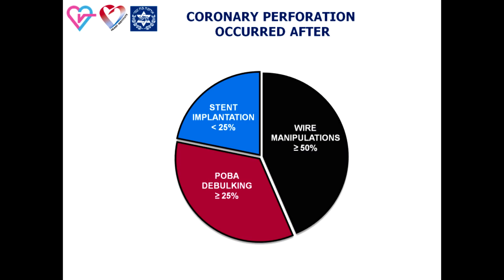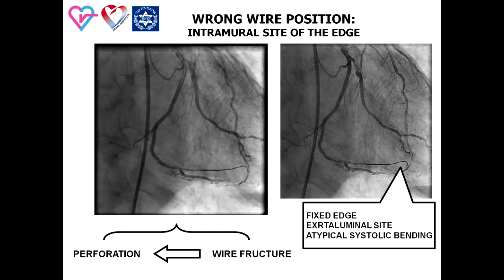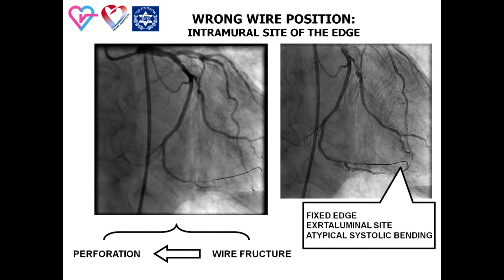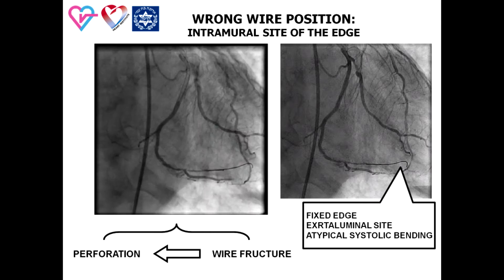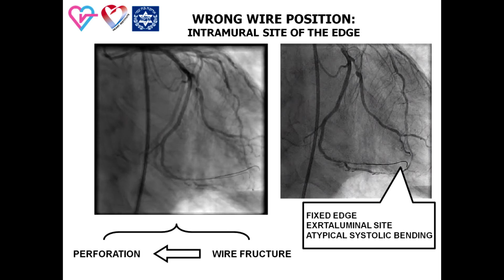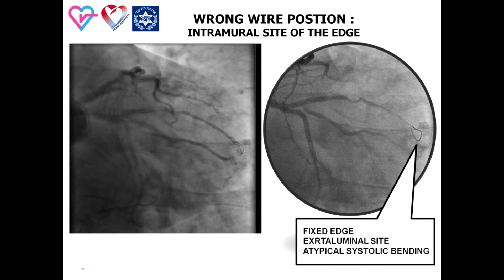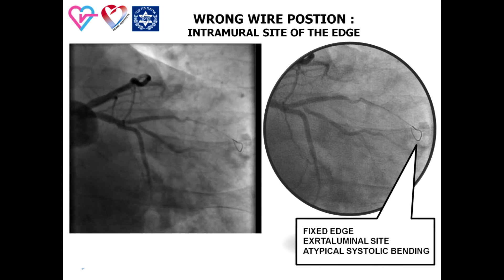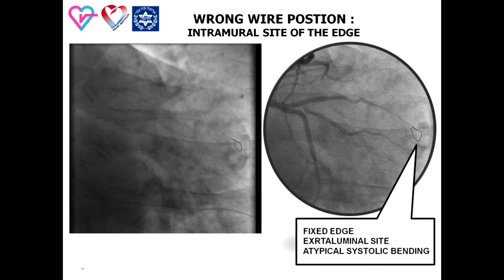The majority of coronary perforations are related to incorrect wire advancement and manipulations. Intramural positioning of wires could be suspected in the following cases: when the tip of the wire is fixed inside the artery lumen, resistance and atypical bending of the tip during wire advancement, and atypical systolic bending of the tip during ventricular contraction.